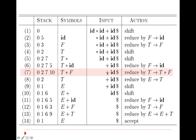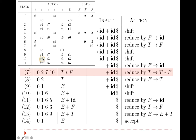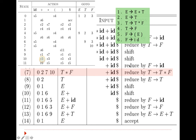Now it is 10 and plus. We refer to 10 and plus, which gives reduce by rule number 3. Rule number 3 is t gives t star f. So t star f is replaced by t, and since the right-hand side has 3 symbols, we pop 3 states from the stack: 10, 7, and 2. What remains on the stack is 0. We refer to 0 and t, which gives state 2, and 2 is pushed onto the stack.